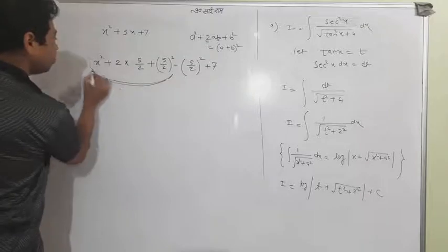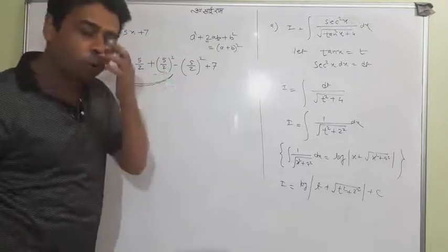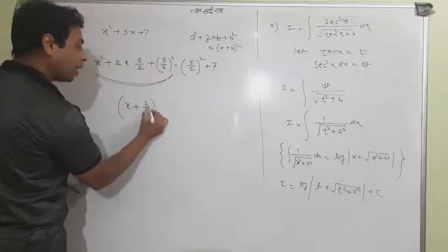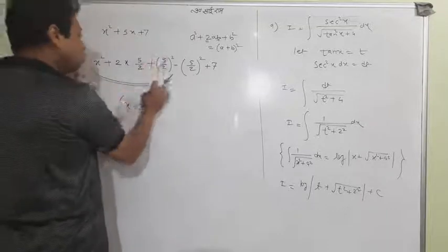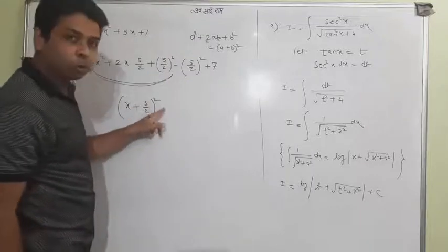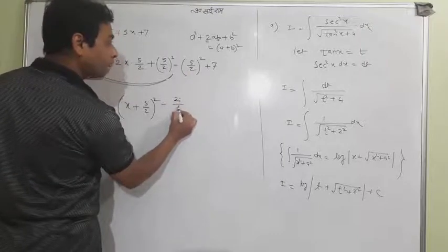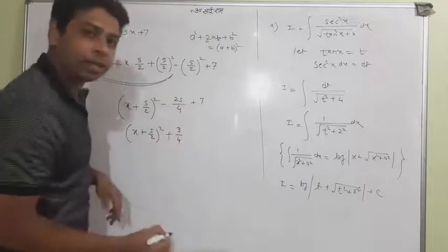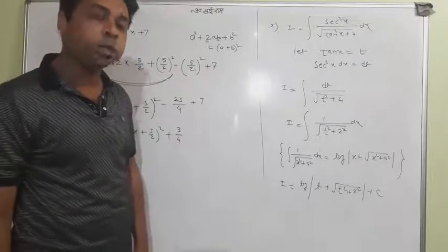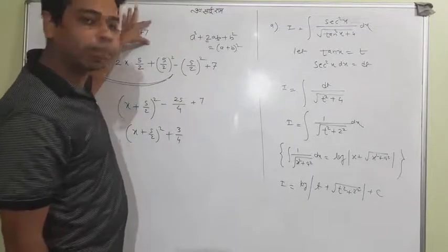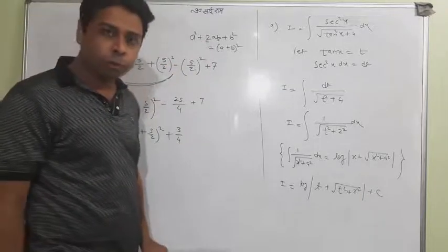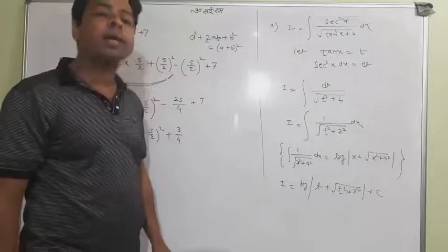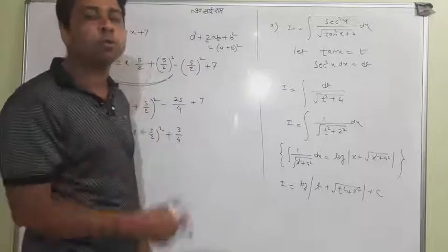The first three terms form (x + 5/2) squared. The remaining terms are minus (5/2) squared plus 7, which is minus 25/4 plus 7. Taking LCM gives minus 25/4 plus 28/4, equaling 3 by 4. So x squared plus 5x plus 7 equals (x + 5/2) squared plus 3/4. Tomorrow we will directly do questions using this. Practice the questions and keep the standard formulas on a single page for reference. Thank you.